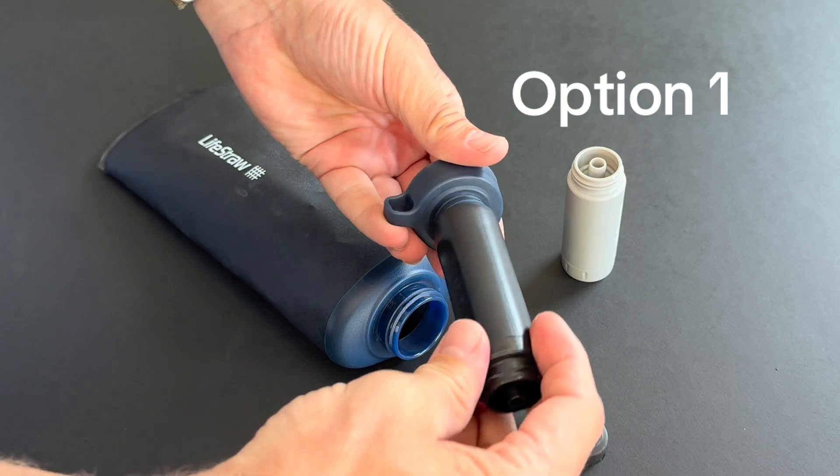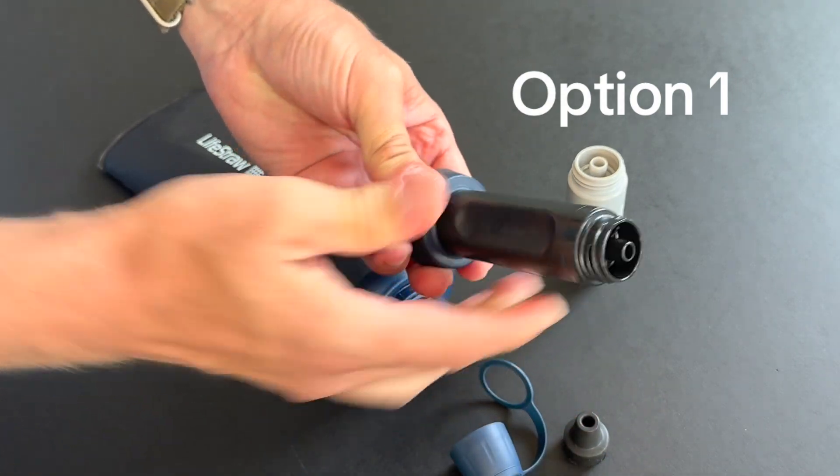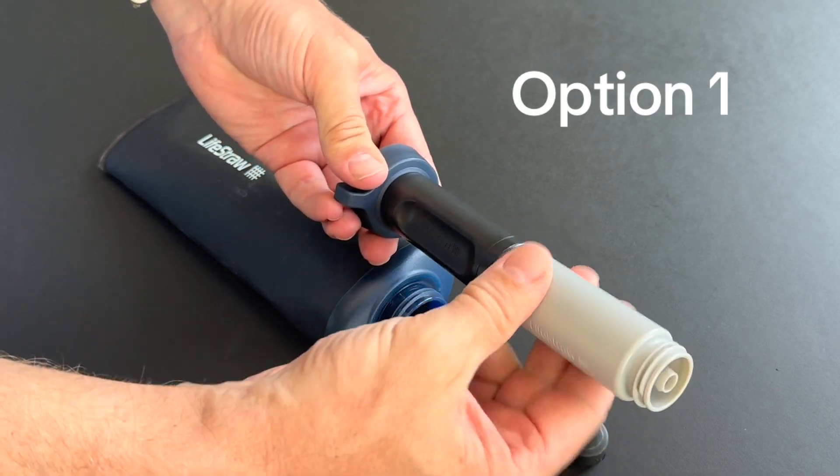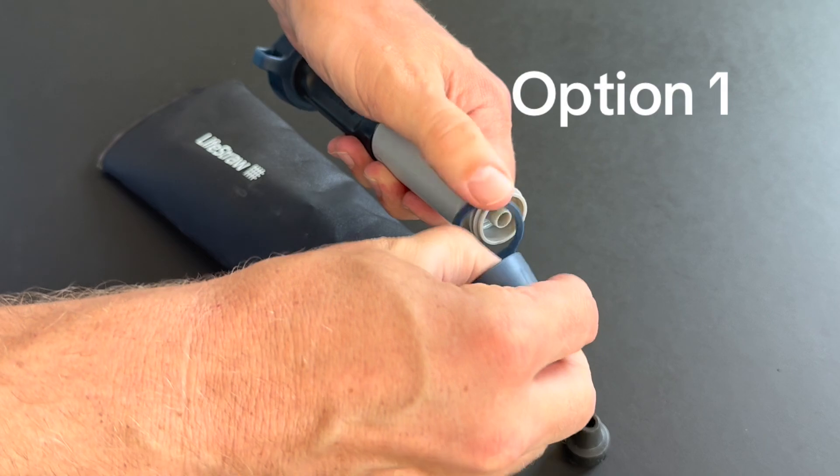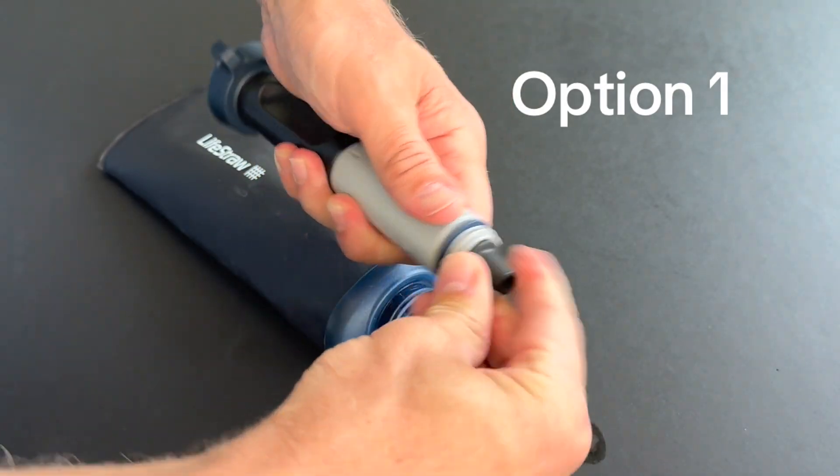You'll take the filter and mount this to the top of the cap. You can then put the carbon filter attachment here, reinstall the top and the mouthpiece,